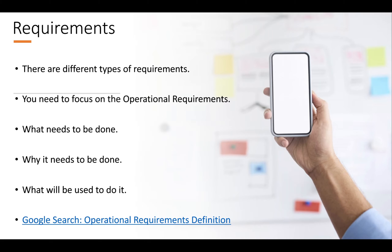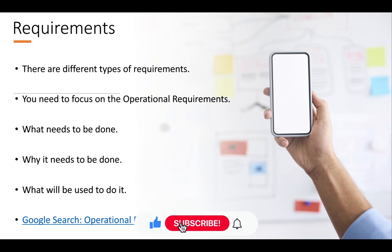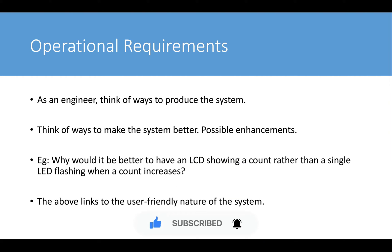There are different types of requirements, but you need to focus on operational requirements — working requirements, the things required for the system to actually work. We don't care if it looks pretty or fancy; we need operational requirements: what needs to be done, why it needs to be done, and what will be used to do it. I'll share a PowerPoint with a Google search for 'operational requirements definition' so you can look up what this actually means for yourself.